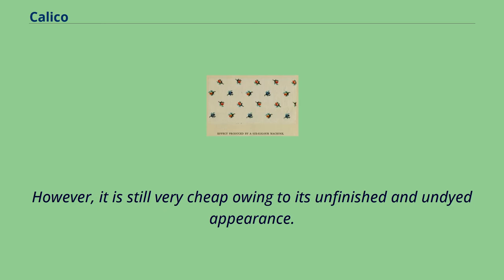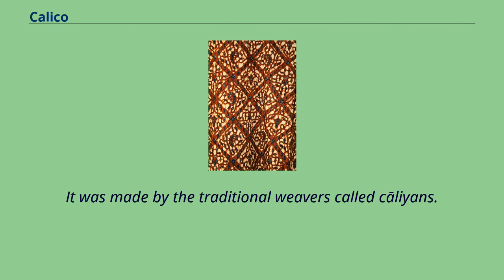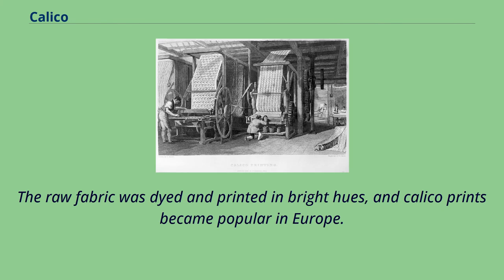It is still very cheap owing to its unfinished and undyed appearance. The fabric was originally from the city of Calicut in southwestern India. It was made by the traditional weavers called Kalians. The raw fabric was dyed and printed in bright hues, and calico prints became popular in Europe.